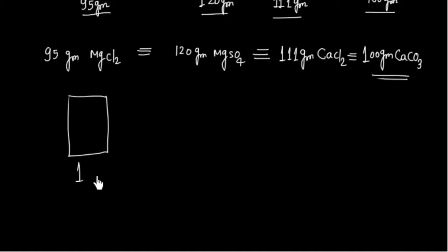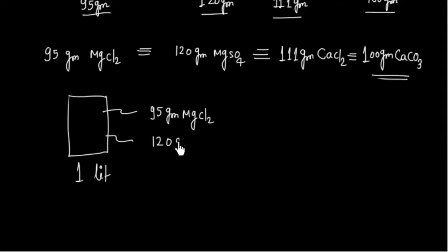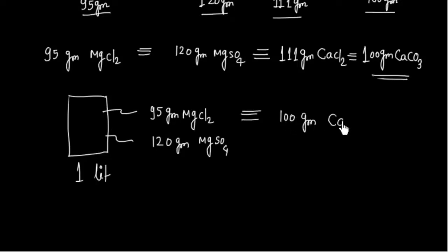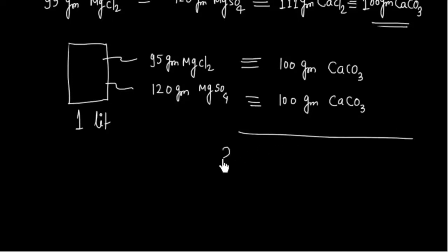For example, if 1 liter of water contains 95 g of MgCl₂ and 120 g of MgSO₄, then 95 g MgCl₂ is equivalent to 100 g CaCO₃, and 120 g MgSO₄ is also equivalent to 100 g CaCO₃. So the total hardness of this water is 200 g of CaCO₃.